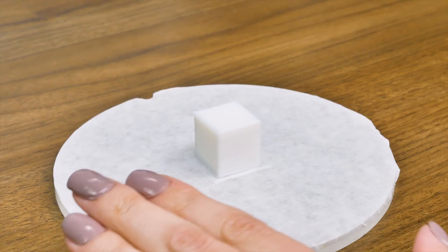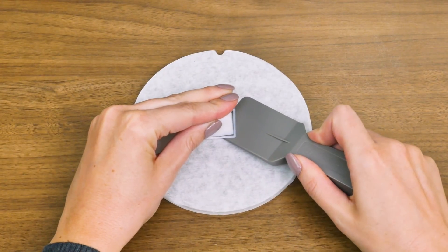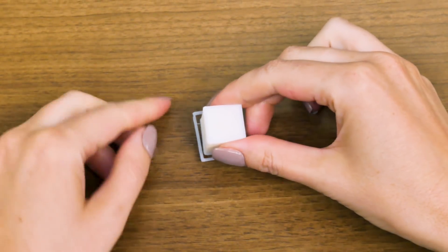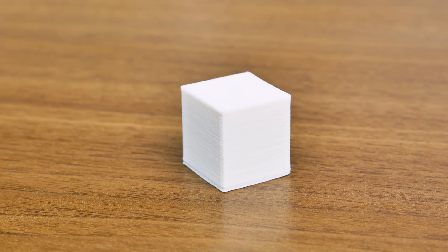Take your spatula tool and gently slide the spatula under the object to remove it from the platform tape. Once you have successfully removed the object, snap off any brim or support pieces you may have. Now you have your 3D object.